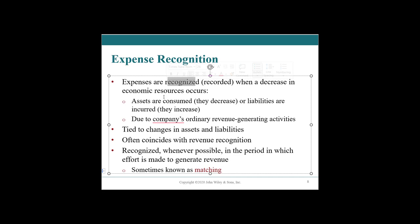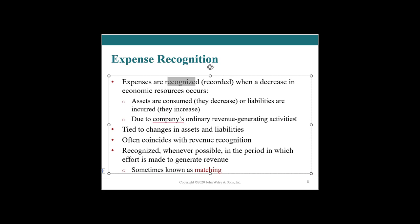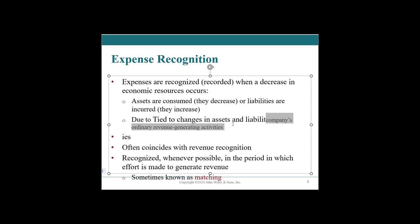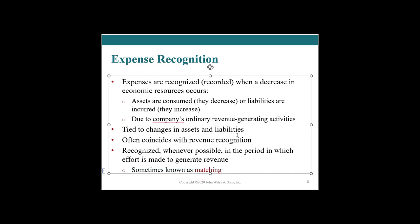So in instances where we have a prepaid asset, we would decrease that asset when the expense is incurred. Or we decrease cash when the expense is incurred, or we increase liabilities. Most often, we're incurring expenses to drive a company's revenue-generating activities. As an organization, we incur expenses to earn revenue. These are tied to assets and liabilities, depending on what type of expense it is and what happened before.